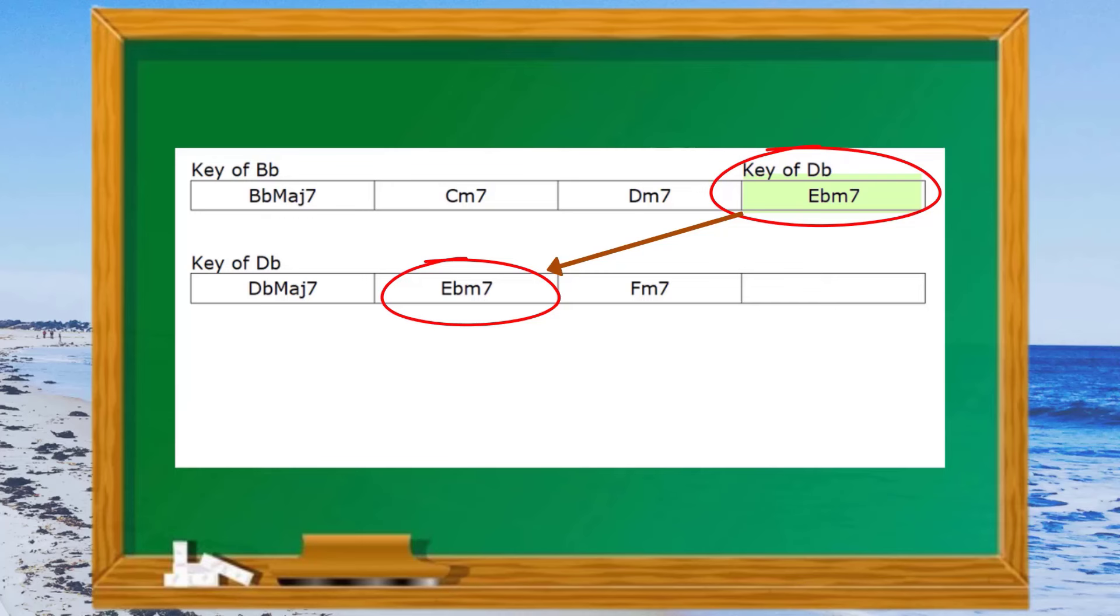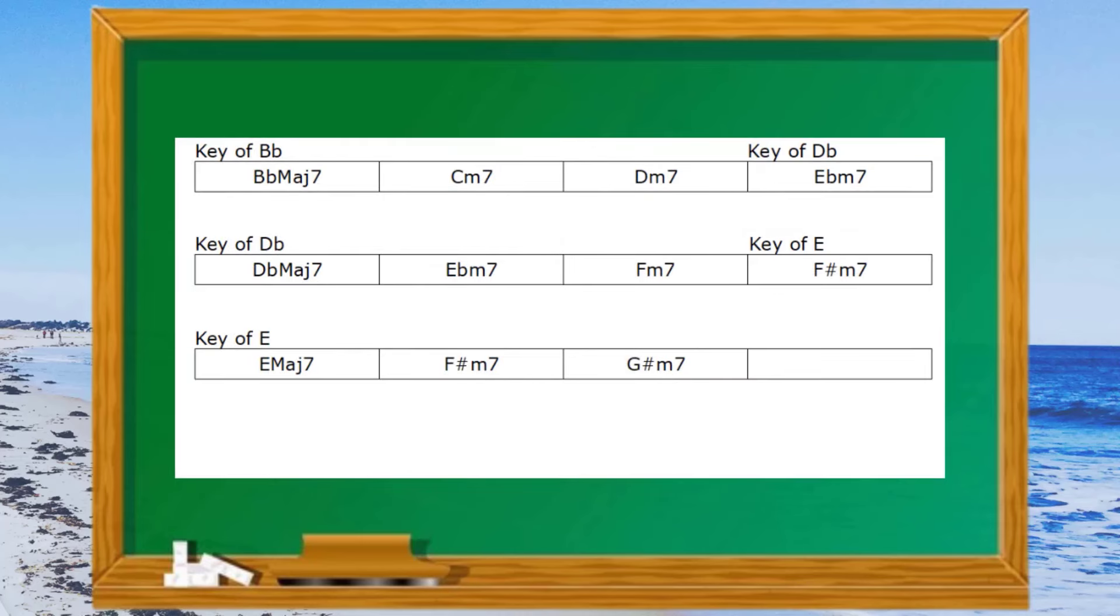And it's the same process if you want to modulate from D flat to E, you would play D flat major 7, E flat minor 7, F minor 7 which would be the traditional chords that we would play. However, when we get to chord 4, we would play F sharp minor 7 or G flat minor 7 which in effect is chord 2 in the key of E major.